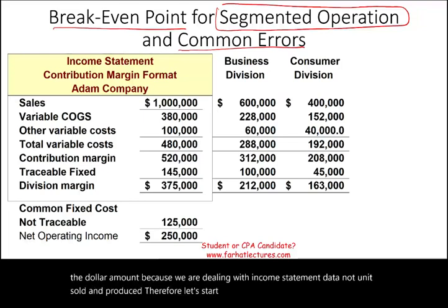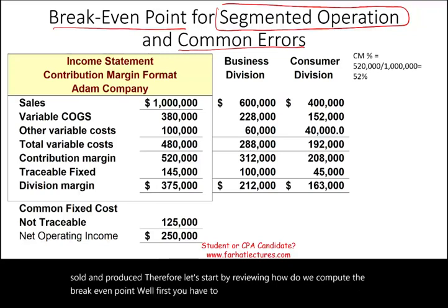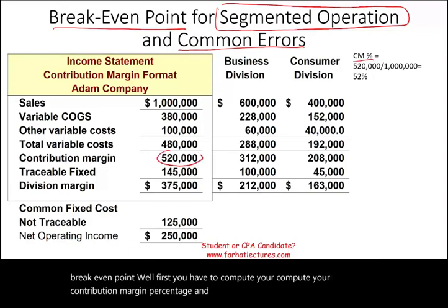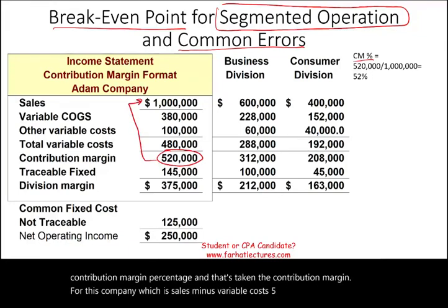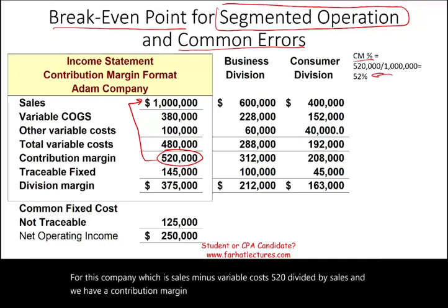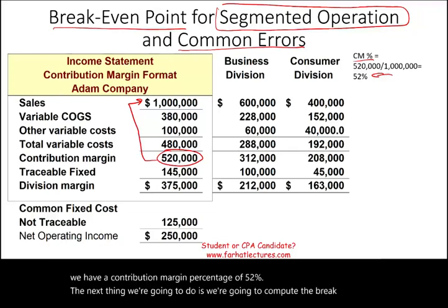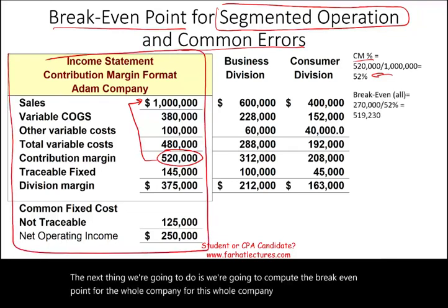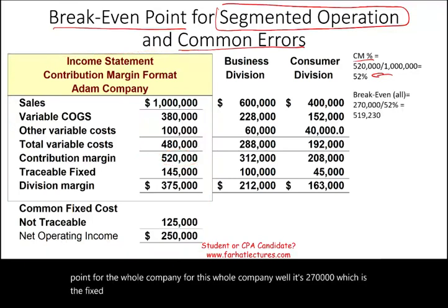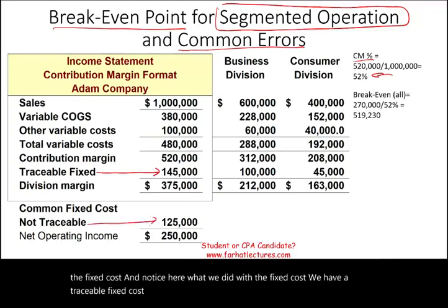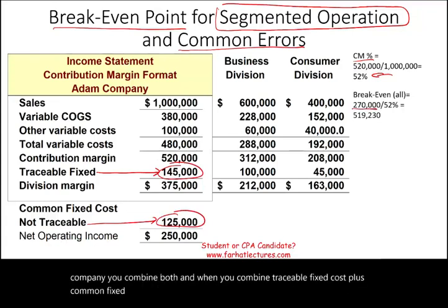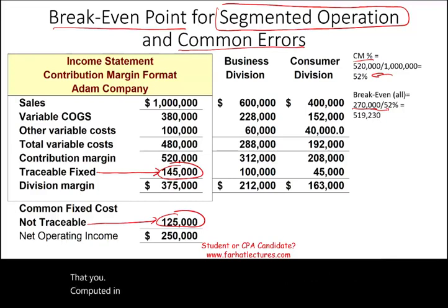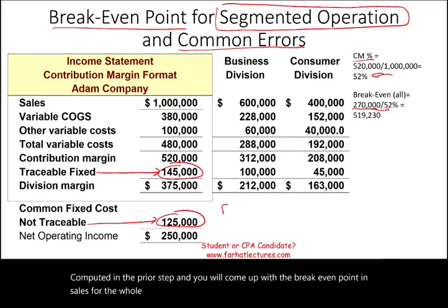Let's start by reviewing how to compute the break-even point. First, you compute your contribution margin percentage — that's sales minus variable cost (520) divided by sales — giving a contribution margin percentage of 52%. Next, we compute the break-even point for the whole company. Fixed cost is 270,000, which combines traceable fixed cost plus common fixed cost. You take 270 divided by the contribution margin percentage of 52% to get the break-even point in sales. The formula is simply: fixed cost divided by contribution margin percentage.